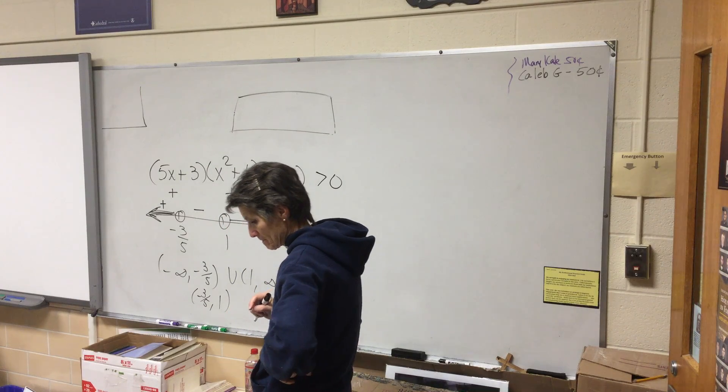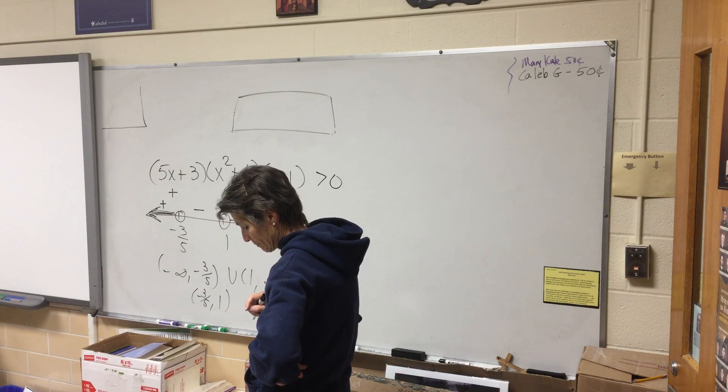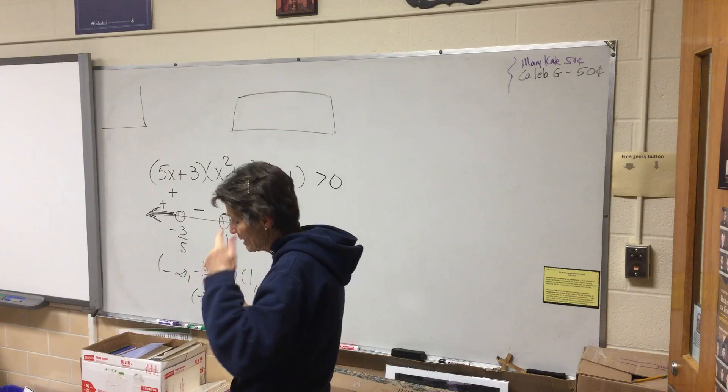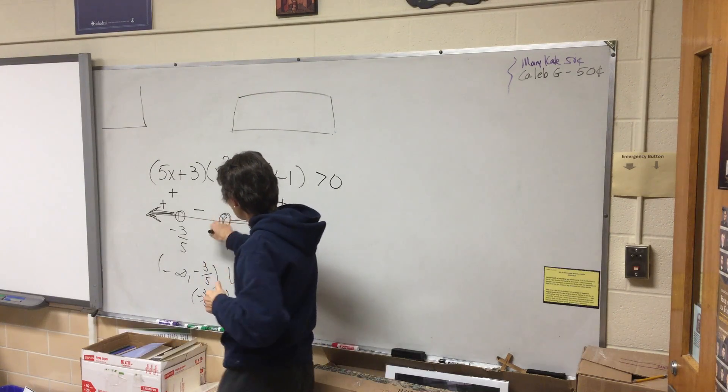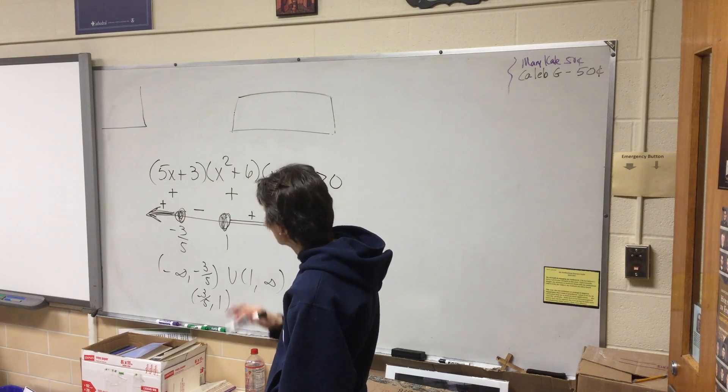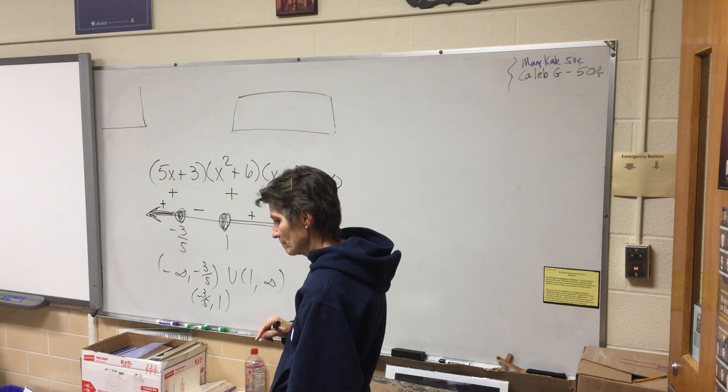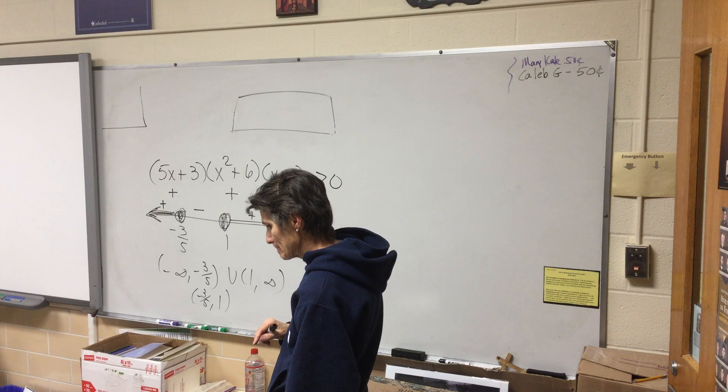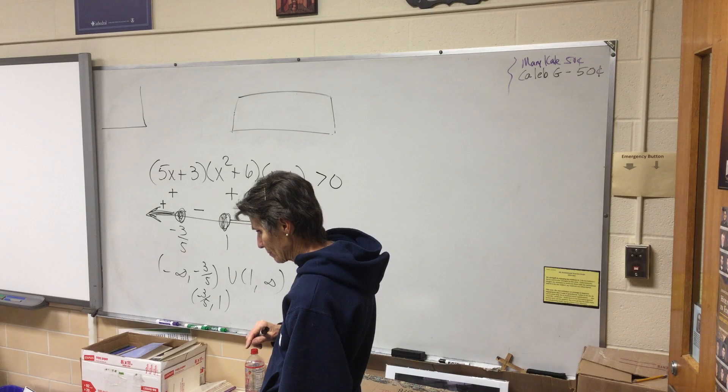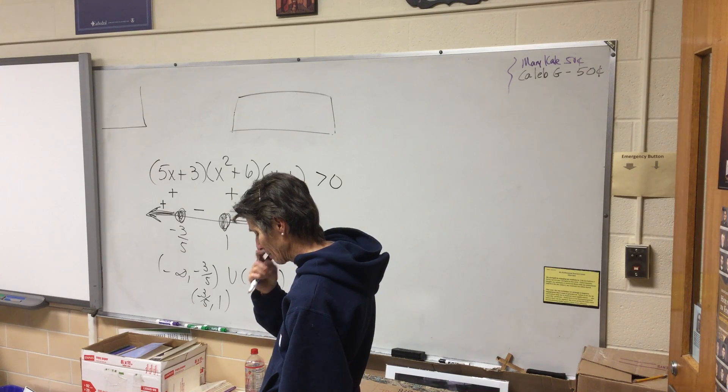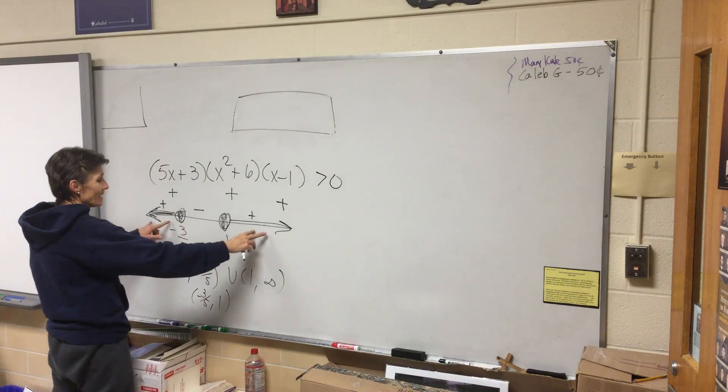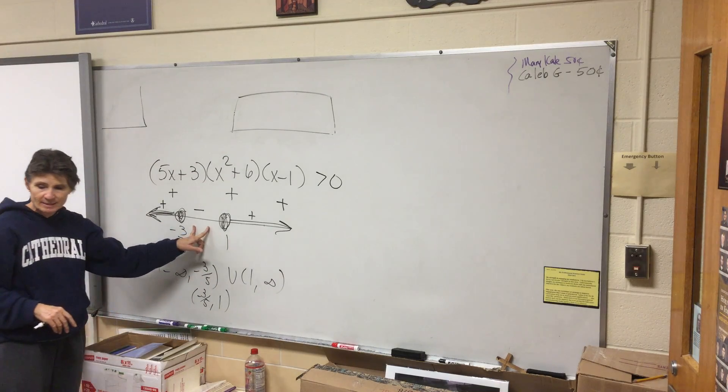It's these two dots on the number line. Those are the values where it equals zero. The ends are where it's positive and the middle is where it's negative.